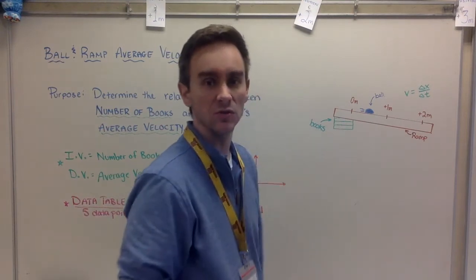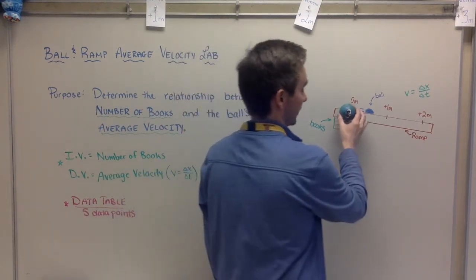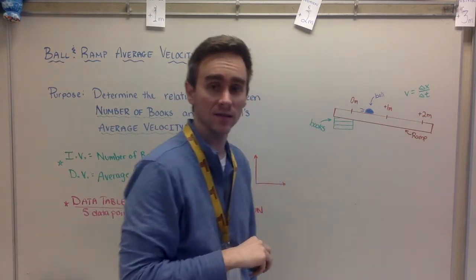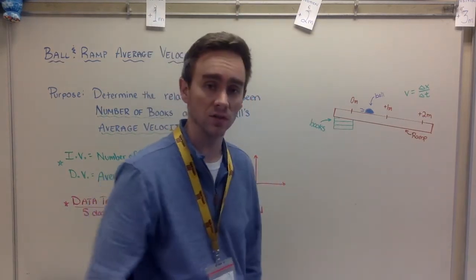Let's just do two meters because it makes it easier. How long it takes to go two meters would give us our average velocity. We could change the number of books to do that.